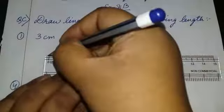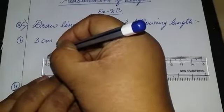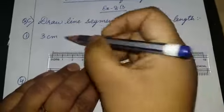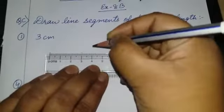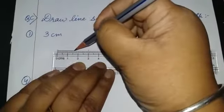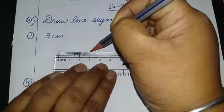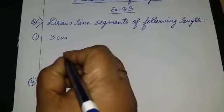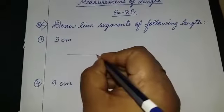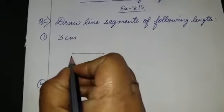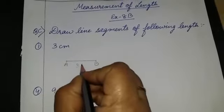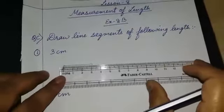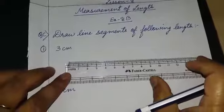3 cm means we will first put the first point on 0, and since it is 3 cm, the next endpoint will be on 3. See, 2 points I have marked. Then you have to draw the line — one single line only. Don't make double lines. Darken the points so they are visible. We will give names to the points: A and B. It is 3 cm. If you want to check, keep the scale and you can see it is 3 cm.